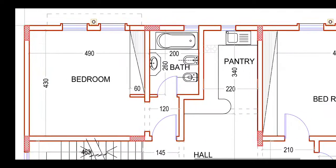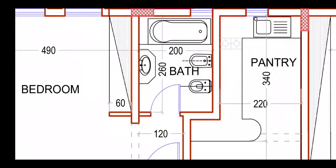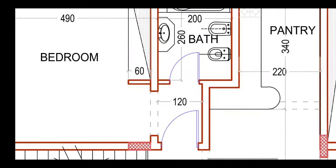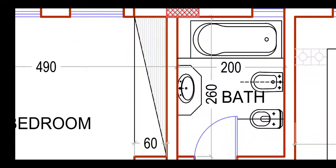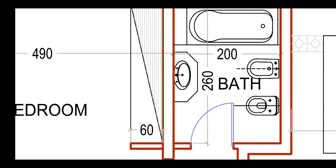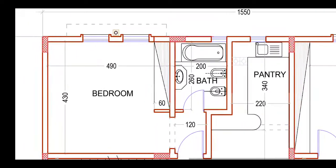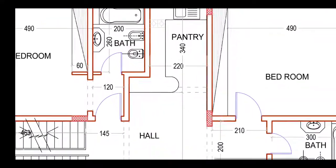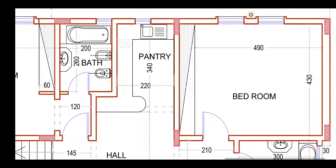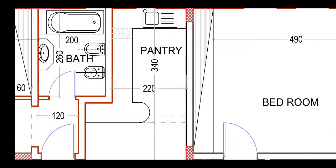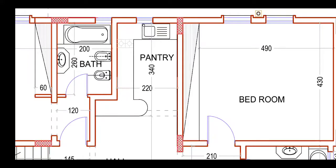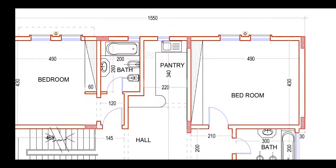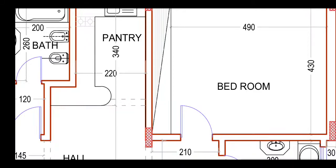The attached bathroom is 260 by 200 centimeters. I have given a cupboard or wardrobe space where you can place your almira. There is also an open pantry for quick service or coffee time, 320 by 340 centimeters. And here is another bedroom.